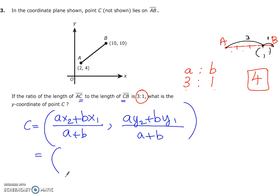So label the first point as X1, Y1. Your X1 and Y1 is 2 and 4. Label the second point as X2, Y2. Your X2 and Y2 is 10 and 10.